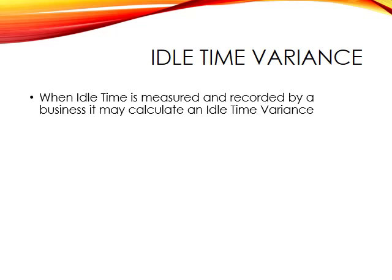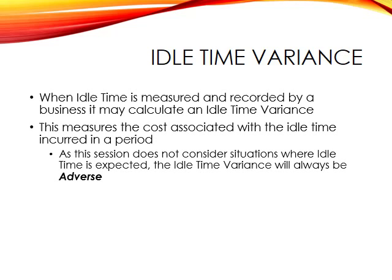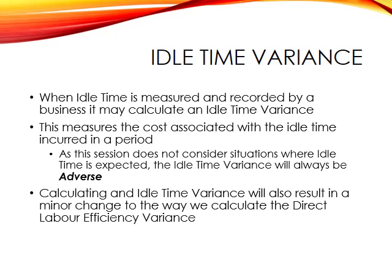The idle time variance can be calculated when idle time is measured and recorded — some businesses do this, some do not. The idle time variance measures the cost associated with the idle time incurred. In this session, on this course, we're not going to consider situations where idle time is expected. Instead, we will always treat idle time as unexpected, and as a consequence, it will always be an adverse variance.